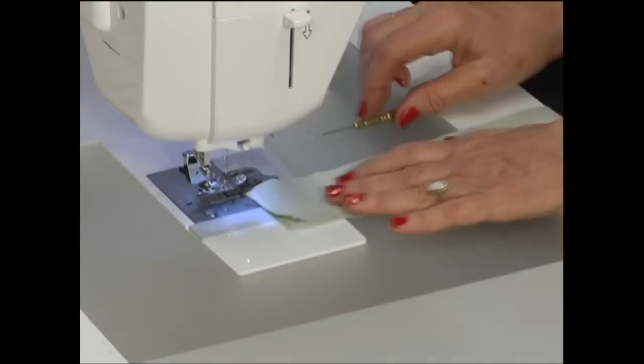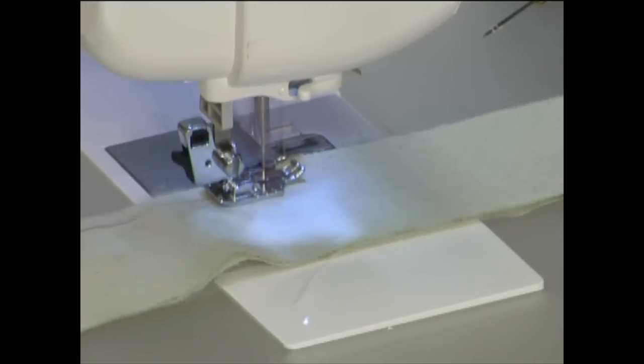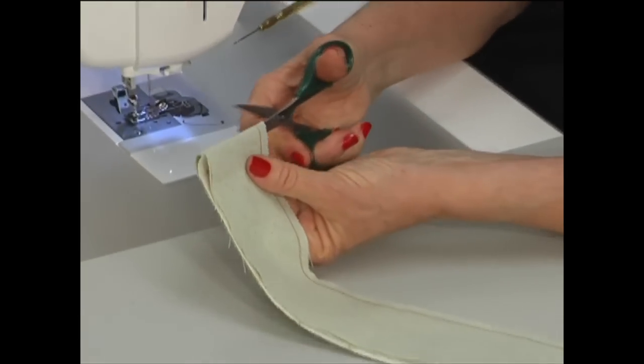Flip the dark right sides together to the background, use your quarter of an inch seam, just pedal to the metal and assembly line sew those strips. Cut them in half on the fold.